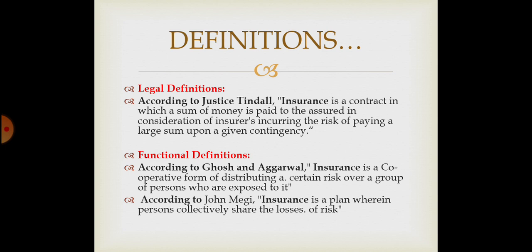Insurance is a cooperative form of distributing a certain risk over a group of persons who are exposed to it. So what is insurance? This is a way of risk management where you are diversifying your risk among many people. For example, with life insurance, if one company is doing insurance, it is not doing it for a single person — many people are doing life insurance together.